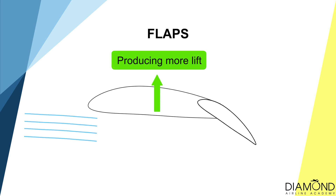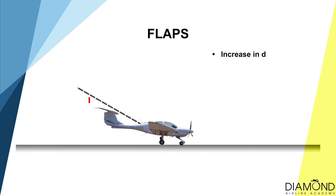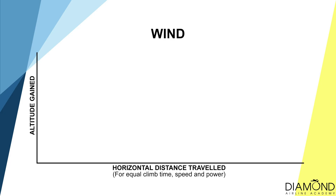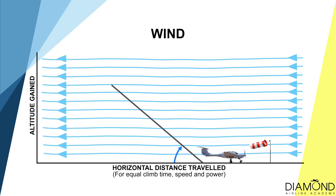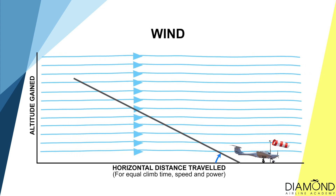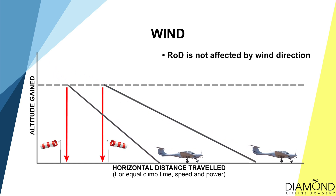The second factor is flaps. When flaps are deployed, not only does it increase lift, but also drag. Because of the increased drag, the aircraft will be in a steeper descent, so the rate and angle of descent will be increased. The next factor is wind direction. When descending in a headwind, your angle of descent will increase; when descending in a tailwind, your angle of descent will decrease. Very important to note: the rate of descent will not be changed by horizontal wind, because it is all about the vertical movement of the aircraft over a certain amount of time.